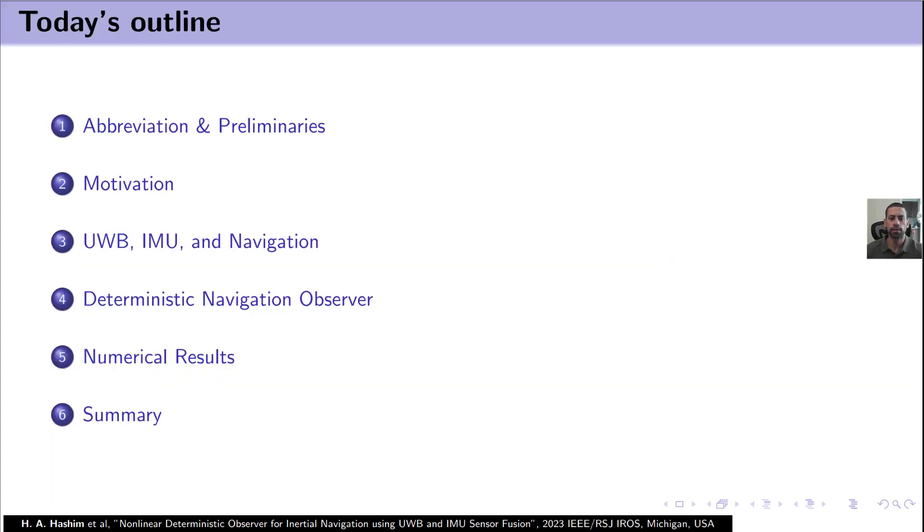In today's outline we will go through abbreviations and preliminaries. Next we will move into motivation. Next we will go through problem formulation discussing ultrawide band, inertial measurement unit, and the navigation problem. Then we will discuss the deterministic navigation observer. We will move next to numerical results and we will conclude our presentation with a summary.